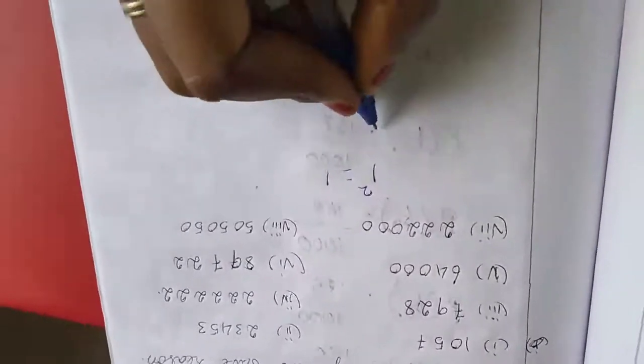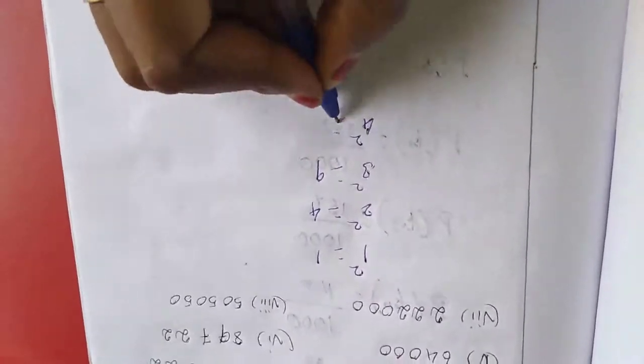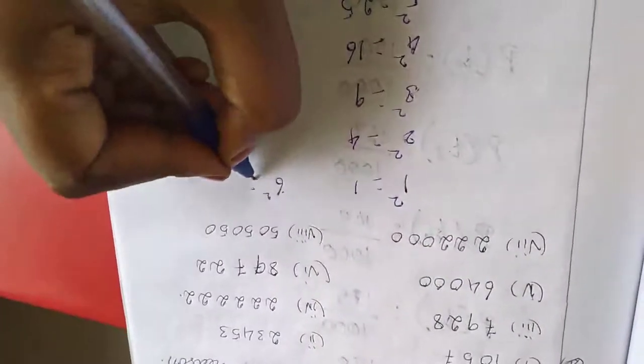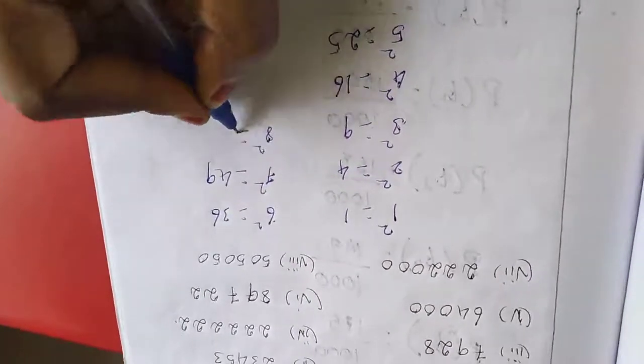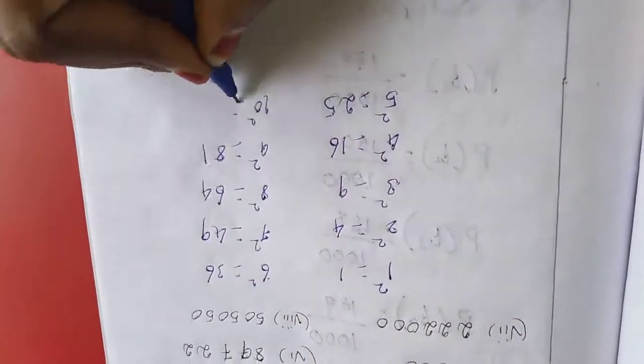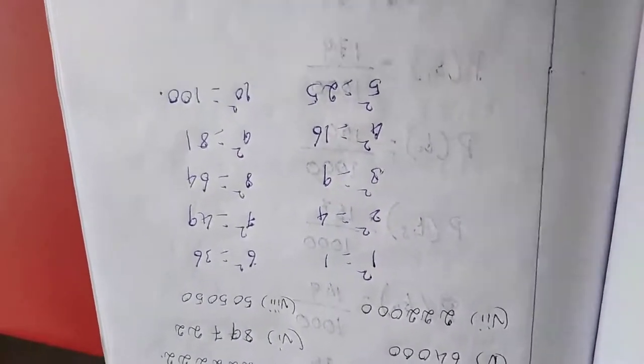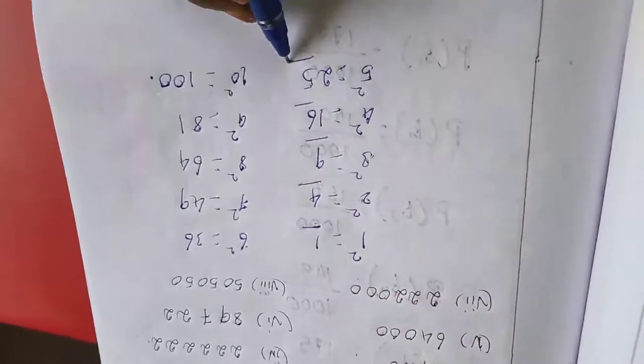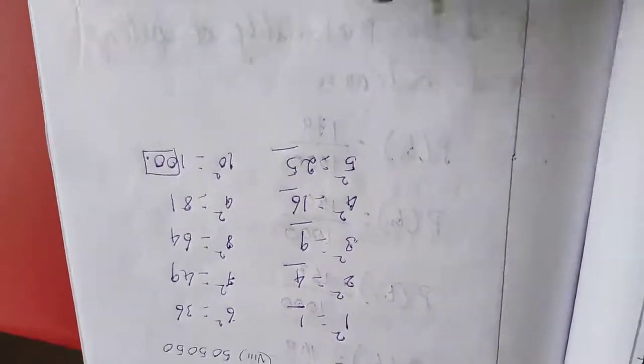1 square equal to 1, 2 square equal to 4, 3 square is 9, 4 square is 16, 5 square is 25, 6 square is 36, 7 square is 49, 8 square is 64, 9 square is 81, 10 square is 100. So, therefore, if you square one number means, the unit place will be 1, 4, 9, 6, 5, like this only, even number of zeros.